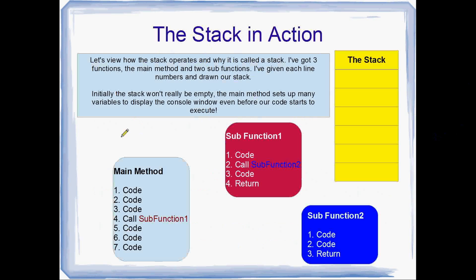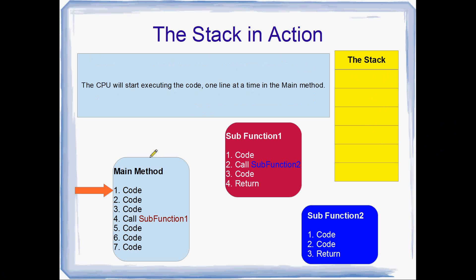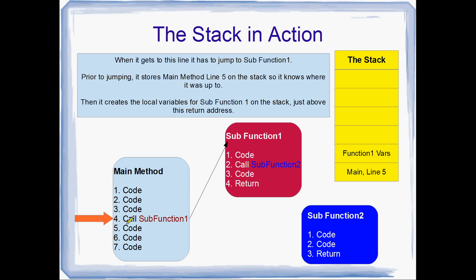Let's have a look at the stack in action. Here I've got the main method on the left and two sub-functions, just called sub-function1 and sub-function2. These would just be two normal functions, maybe like void, calculate something, with a bunch of parameters. And over here in yellow I've got the stack. This is going to start filling up from the bottom to the top, and it's actually going to pop values off in the opposite order to what they were put on. Usually the CPU is just executing one line after another, starting in the main method, until it gets to a function call — this is a function call to sub-function1.